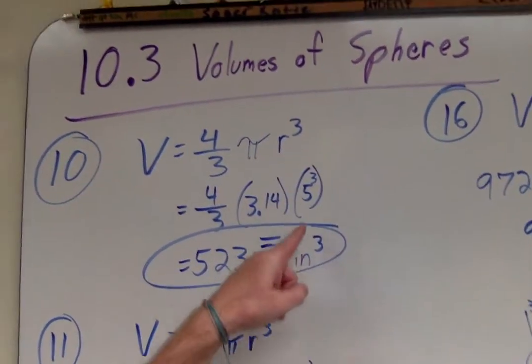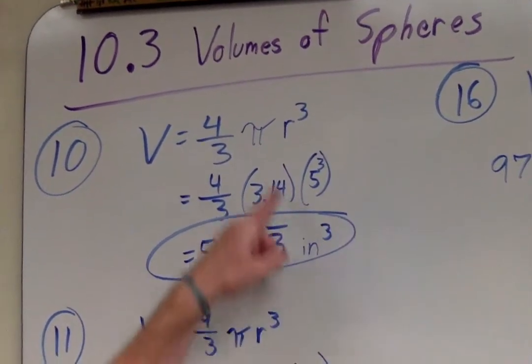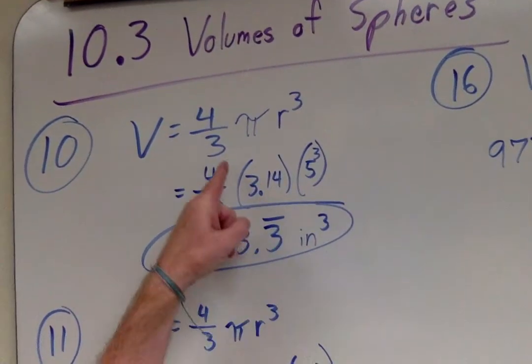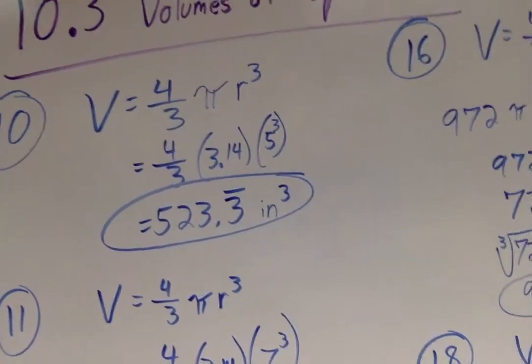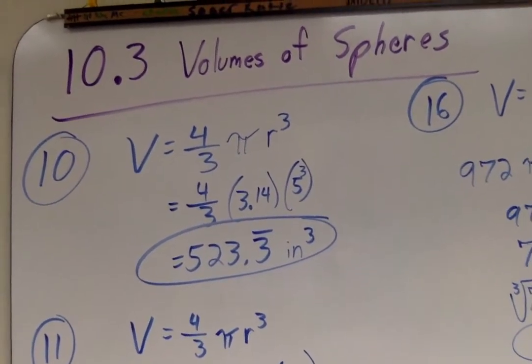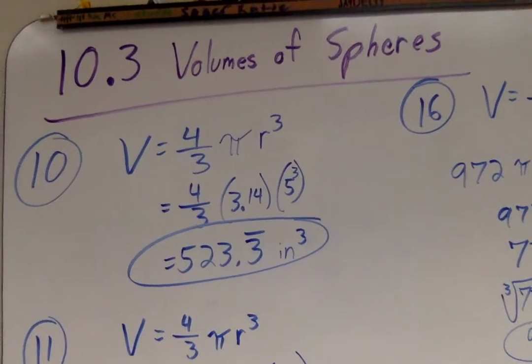Well, the radius must have been a 5! Because I replaced my radius with a 5! My pi with a 3.14! 125 times pi times 4 divided by 3! I got 523 and 1 third!